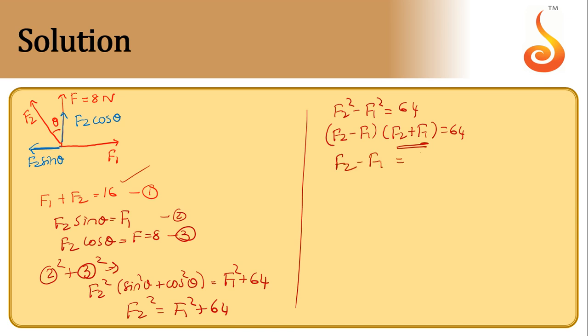So F2 minus F1 is equal to 64 divided by 16, that is 4. So I have F2 plus F1 is equal to 16 from equation 1, and F2 minus F1 is equal to 4.